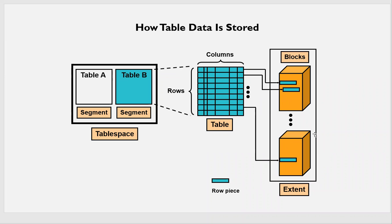That is called row chaining and row migration — we'll look into that in a later part. So one way is if the row is big, it will be split across two blocks. And if the row is small, both rows can fit into one block. Those are called row pieces. All the blocks — the combination of all these blocks — will make the extent, and then those group of extents makes the segments, and those segments will be assigned to table B.